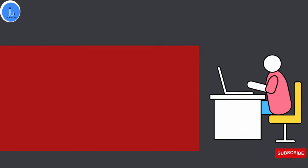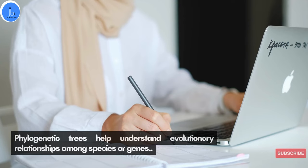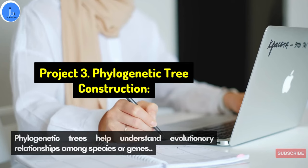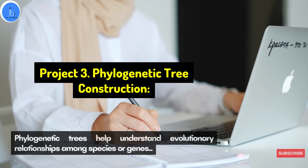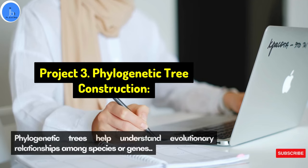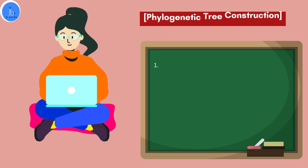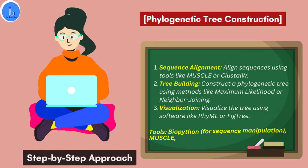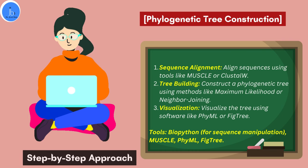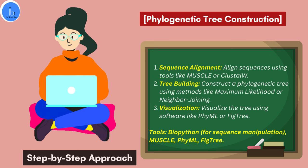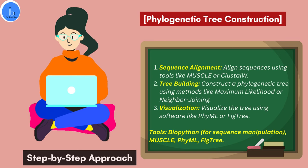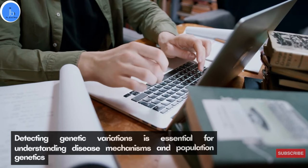Project three is phylogenetic tree construction. Phylogenetic trees help understand the evolutionary relationships among species or genes. Required tools include BioPython, MUSCLE, FigTree, etc. Steps include: first, sequence alignment — align your sequences using MUSCLE or ClustalW. Then build the tree — construct a phylogenetic tree using methods like maximum likelihood or neighbor joining. Finally, visualization — visualize the tree using software like PhyML or FigTree.